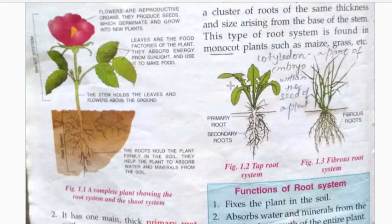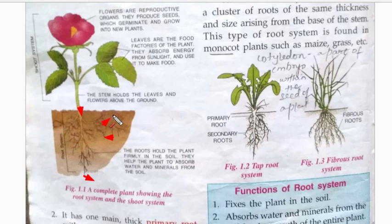Each plant has one thick main root known as the primary root. The primary root gives rise to a number of side branches called secondary roots. These secondary roots end in a number of fine hair-like projections known as root hairs. So the structure goes: primary root → secondary roots → root hairs.